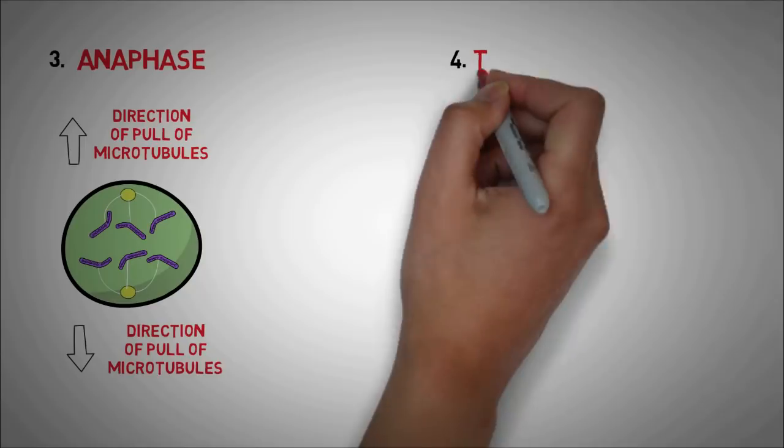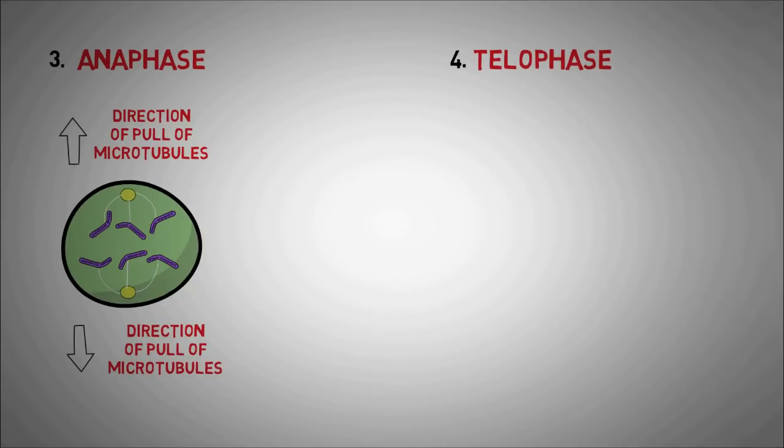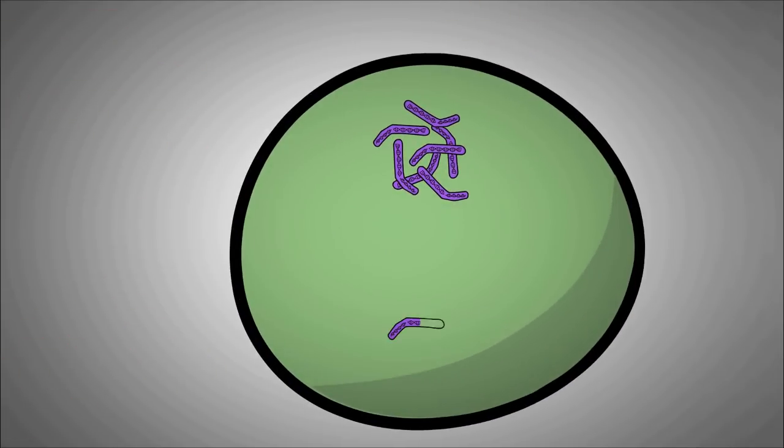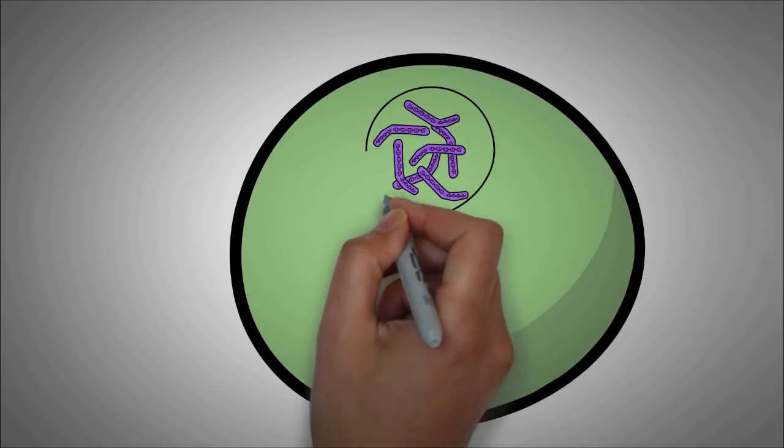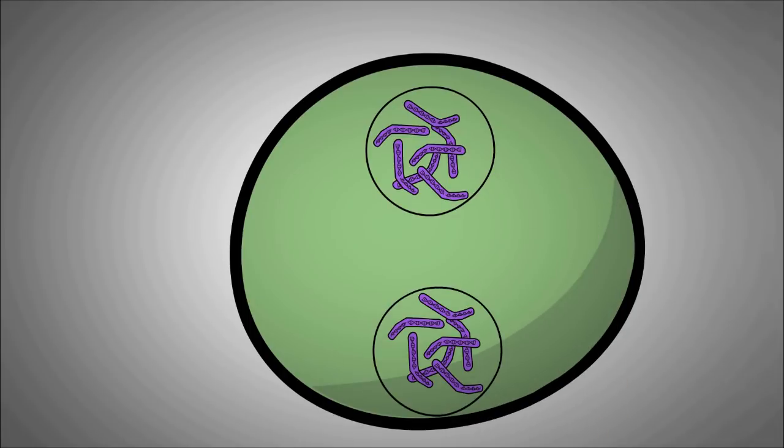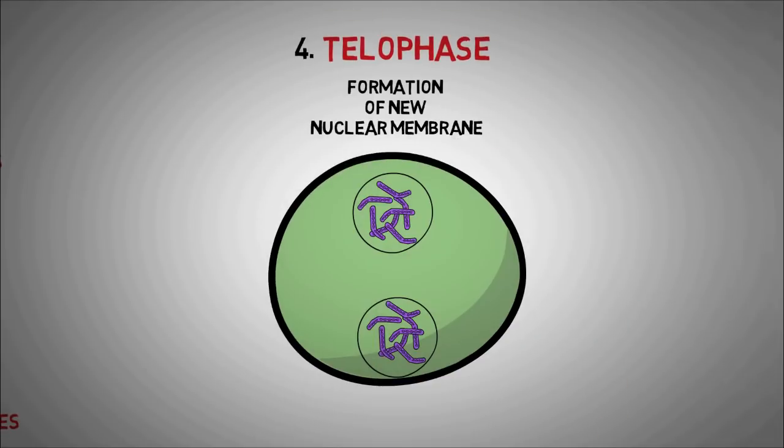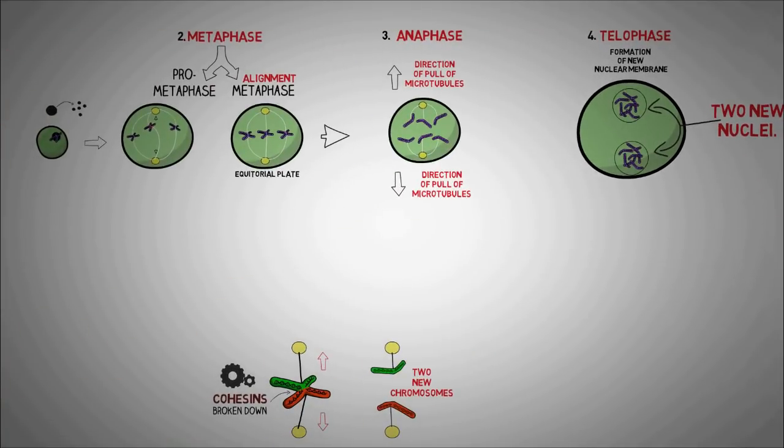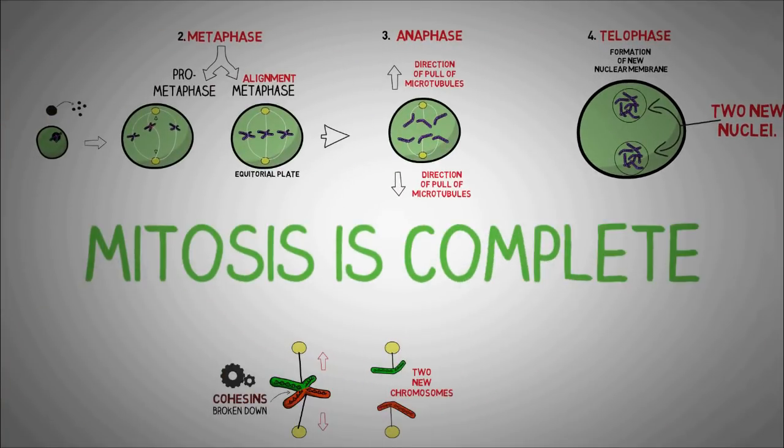The next phase is the telophase, which is nothing special but formation of new nuclear membrane around the two sets of chromosomes. These two sets of chromosomes are equal and exactly alike. This leads to formation of two completely new nuclei which are exact copy of each other. With this, mitosis is complete and each daughter cell has an identical set of chromosomes.